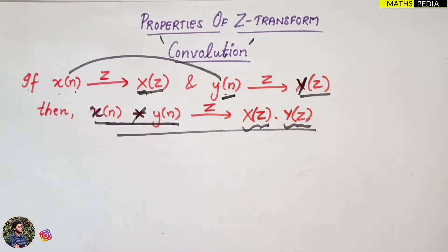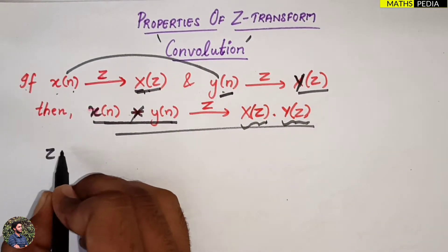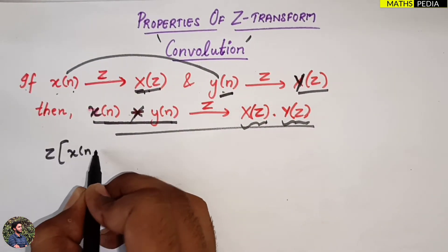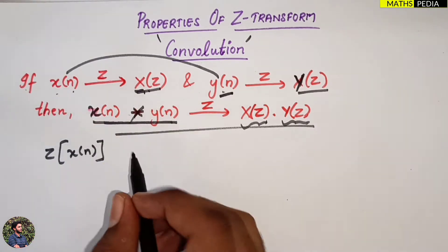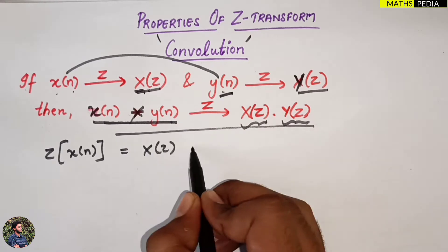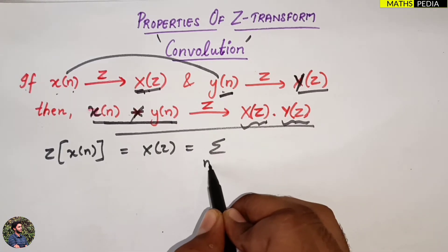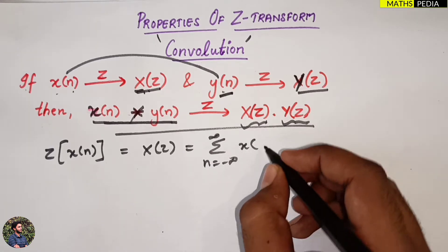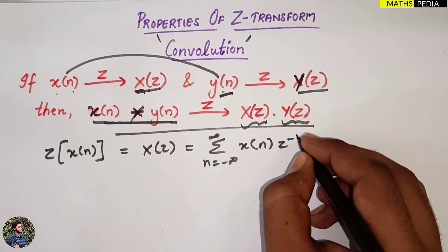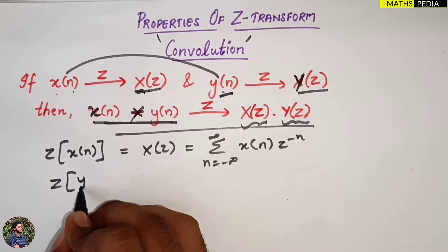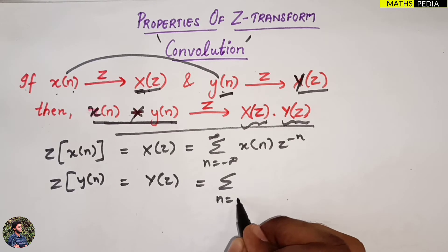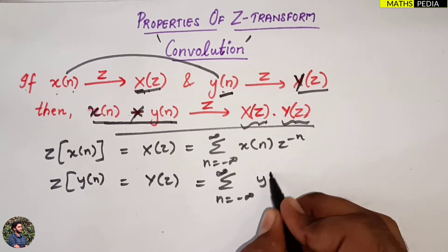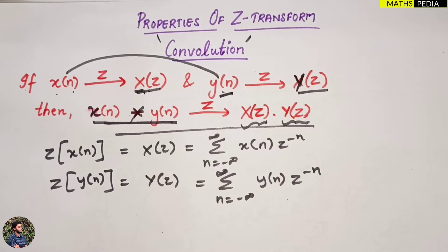Starting with the definition: the Z-transform of X(n) is X(Z), which is given by the summation from n = −∞ to ∞ of X(n)·Z^(−n). Similarly, the Z-transform of Y(n) is Y(Z), which equals the summation from n = −∞ to ∞ of Y(n)·Z^(−n).